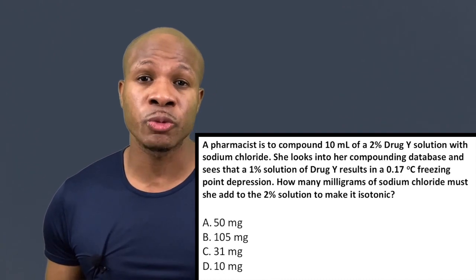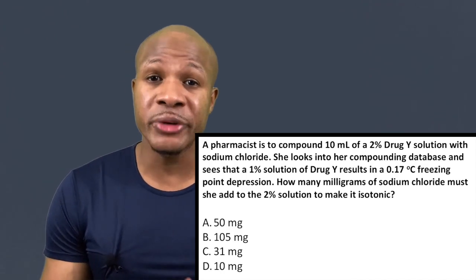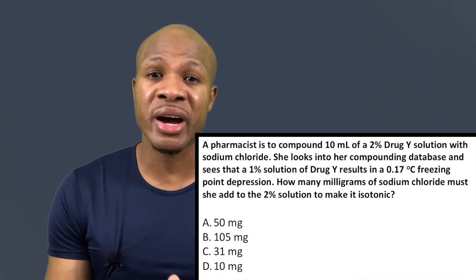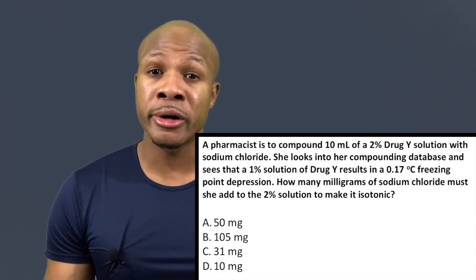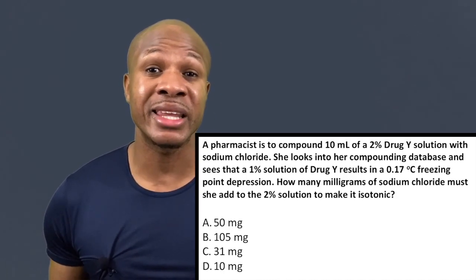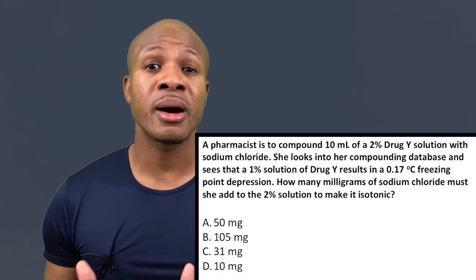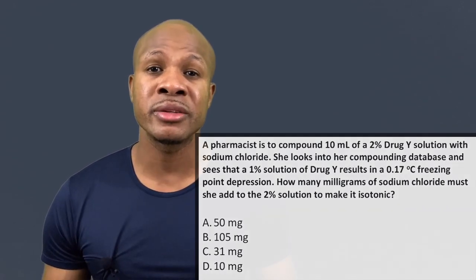So if this pharmacist wants to make an isotonic solution of drug Y, she needs to make sure it freezes at negative 0.52 degrees Celsius. A 1% solution of drug Y freezes water at negative 0.17 degrees Celsius, but we need this solution to freeze at negative 0.52. We need to figure out how much sodium chloride to add. We know that a 1% drug Y solution lowers the freezing point by 0.17 degrees Celsius.